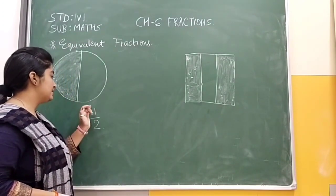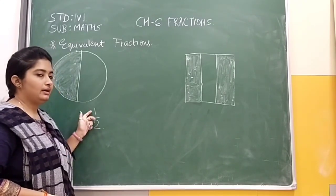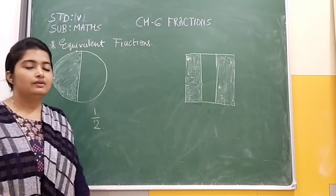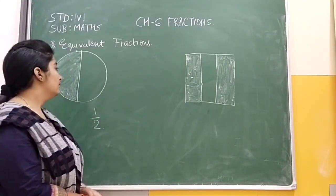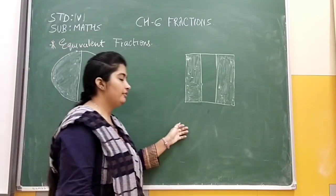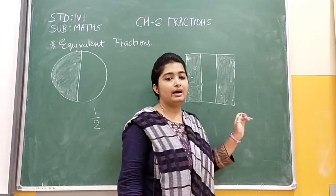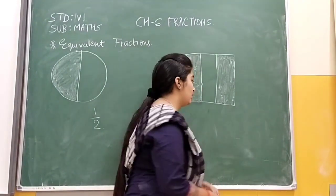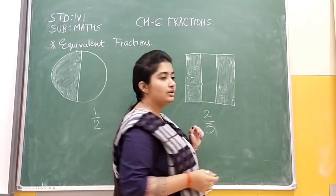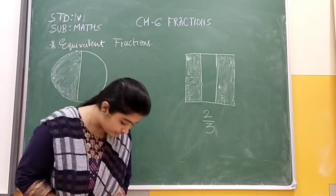Of two parts, one part is filled. Here our fraction will be one upon two. And here, out of three parts, there are two parts colored. So that fraction will be two upon three.